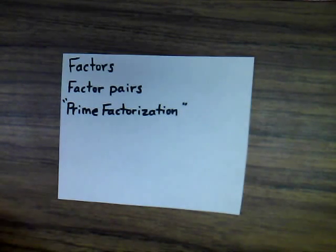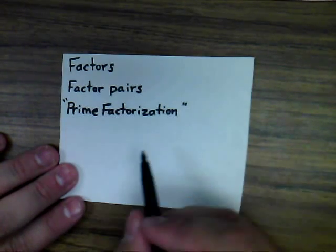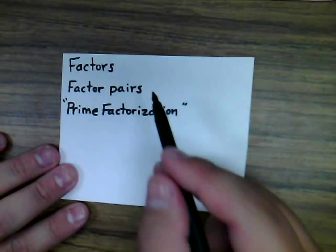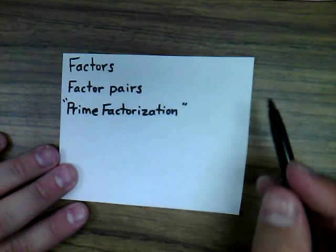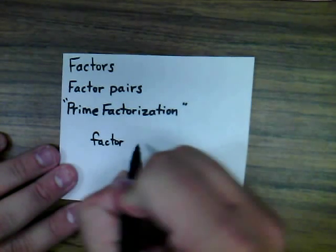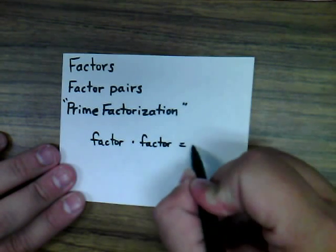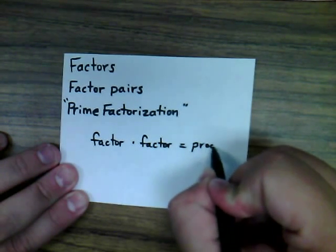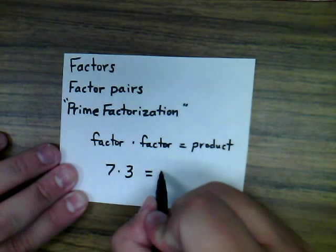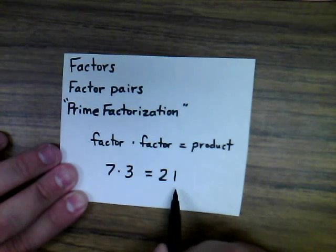Today's video is going to be on factors, factor pairs, and prime factorization. One thing to note first is the vocabulary. The word 'factors' refers to numbers that are multiplied to give a product. So for example, you might write: factor times factor equals product. In the problem 7 times 3 equals 21, both 7 and 3 are factors of 21.